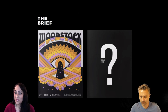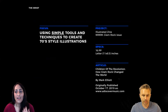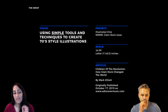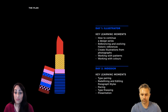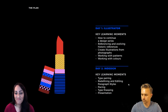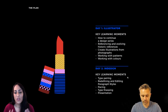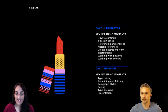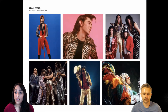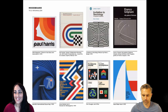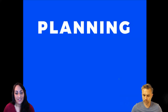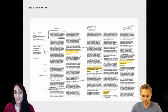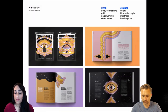Last time we did the Woodstock edition, this time we're doing good old glam rock. There are some specs here and the actual article itself, but you can have a look in more detail on the stream from yesterday. We're up to day two on this plan, so we're in InDesign, and we're going to be hopefully looking at some type pairing, redefining and editing paragraph styles, pacing, type finesse and presentation if we get there. This is the mood board of references we had, and we've already done quite a bit of planning.